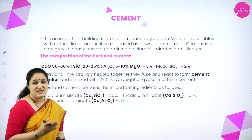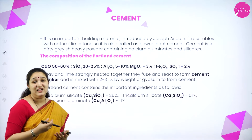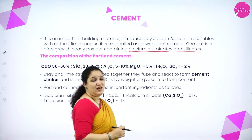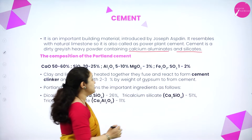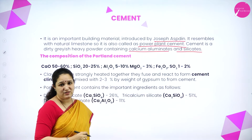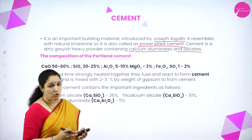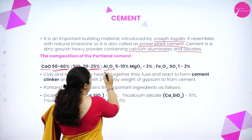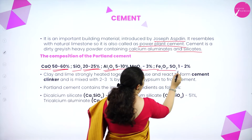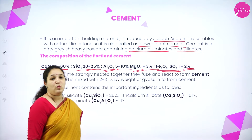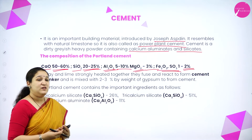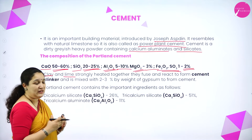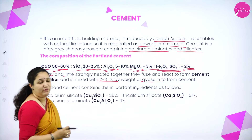Next is cement — a heavy grayish powder of calcium silicates and calcium aluminates, also called Portland cement, first introduced by Joseph Aspin. Portland cement contains: CaO 50–60%, SiO₂ 20–25%, Al₂O₃ 5–10%, MgO 3%, and iron oxide and SO₃ 1–2%. It is prepared by strongly heating clay and lime together to form cement clinker, which is then mixed with 2–3% gypsum to give cement.